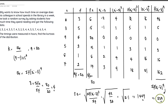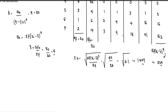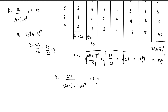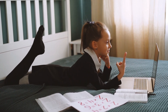With the fourth moment = 234, sample size n = 20, and standard deviation = 1.449, we can now calculate kurtosis. K = 234 divided by (20 − 1) times 1.449 raised to the power of four. Substituting all values, the kurtosis equals 2.79. Since 2.79 is less than 3, this data set has a platykurtic distribution.